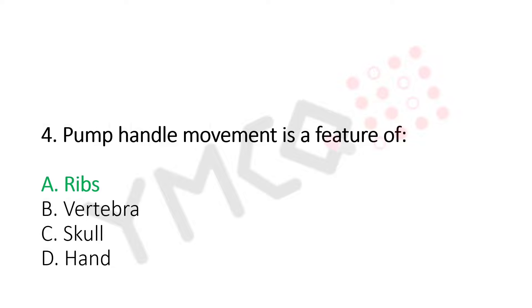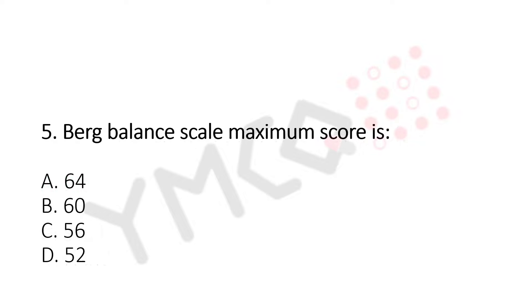Let's move to question number 5. Berg Balance Scale maximum score is: Option A, 64. Option B, 60. Option C, 56. Option D, 52. And the answer is Option C, 56.